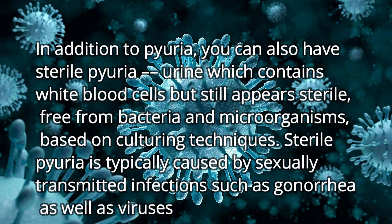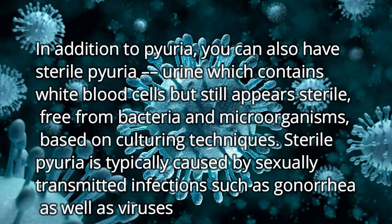In addition to pyuria, you can also have aseptic pyuria — urine which contains white blood cells but still appears free from bacteria and microorganisms based on culturing techniques. Aseptic pyuria is typically caused by sexually transmitted infections such as gonorrhea, as well as viruses.